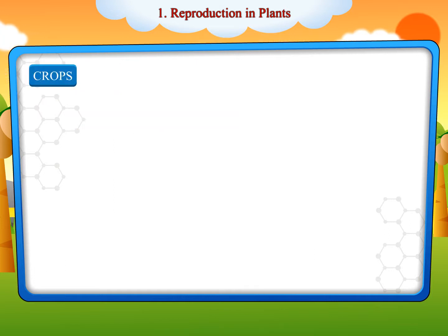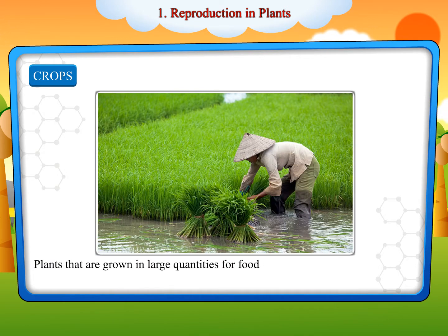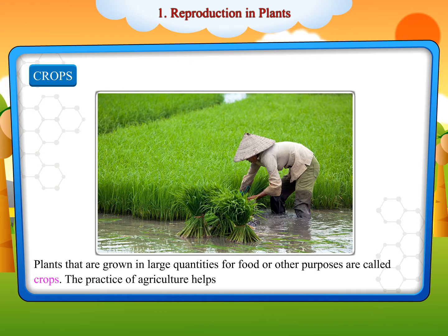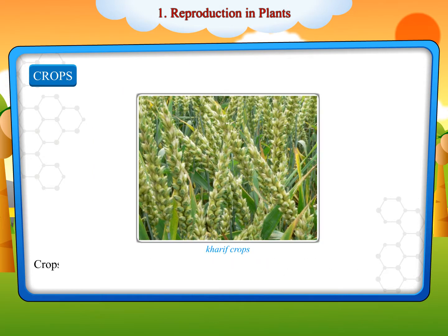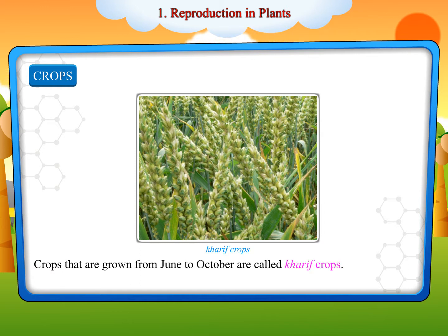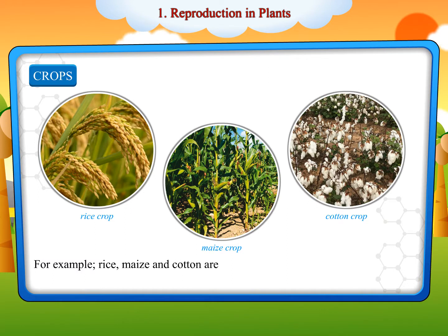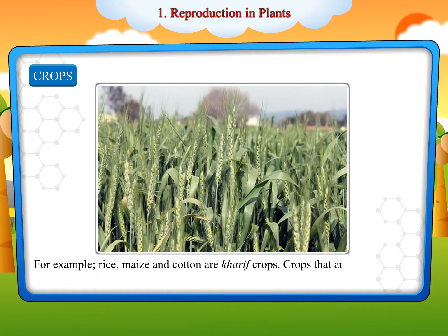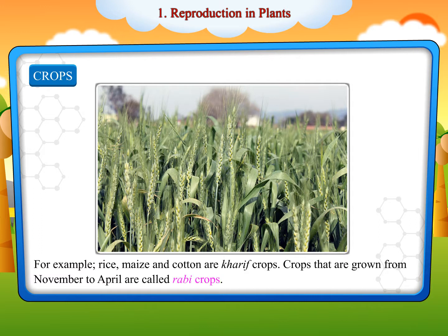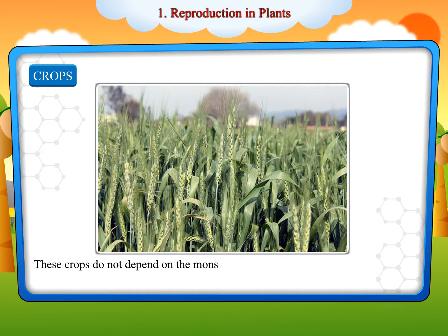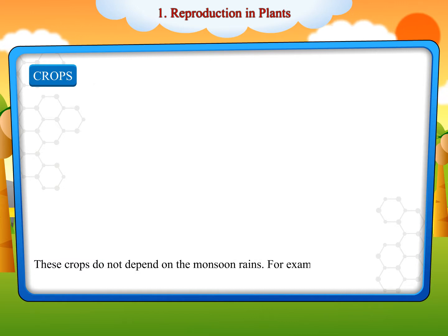Crops: Plants that are grown in large quantities for food or other purposes are called crops. The practice of agriculture helps to grow crops. Crops grown from June to October are called kharif crops. These crops depend on the monsoon rains. For example, rice, maize and cotton are kharif crops. Crops grown from November to April are called rabi crops. These crops do not depend on the monsoon rains. For example, wheat, gram and pea are rabi crops.